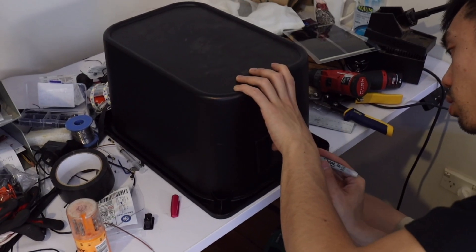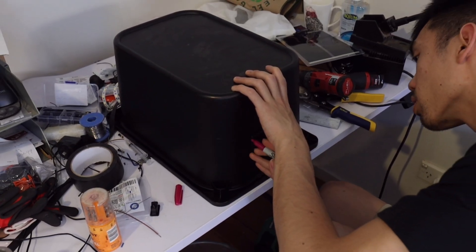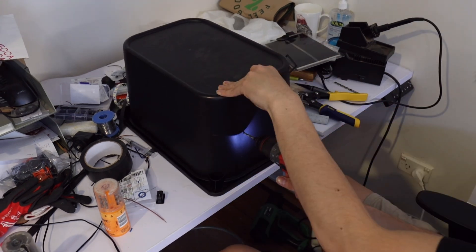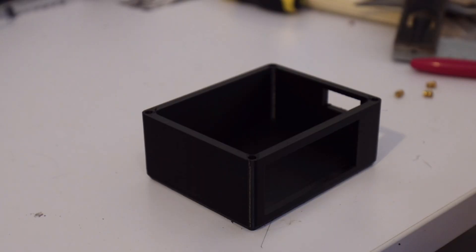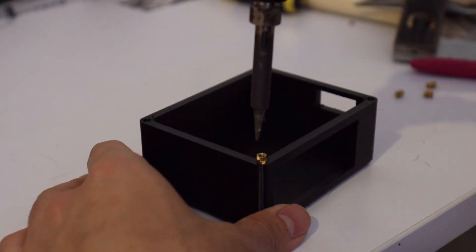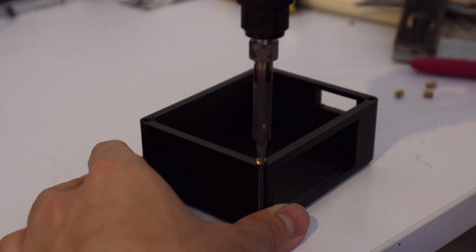I also printed a template to mark the holes that I'll be drilling. To attach the casing to the tub, I've melted these brass threaded inserts into the casing that would accept M3 bolts.